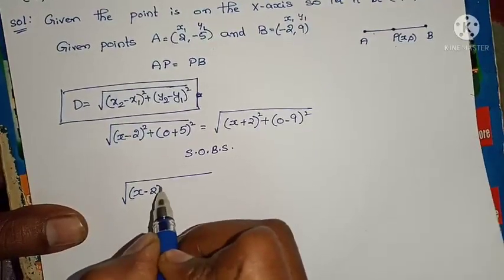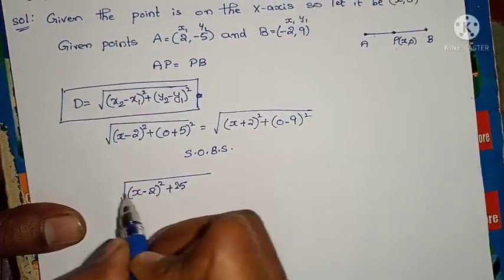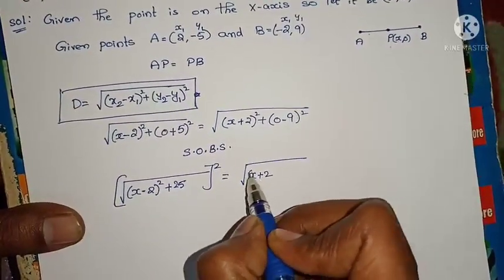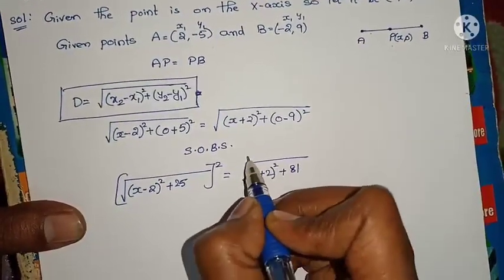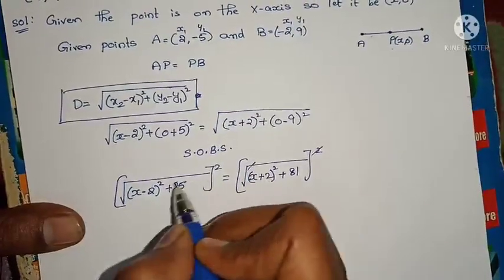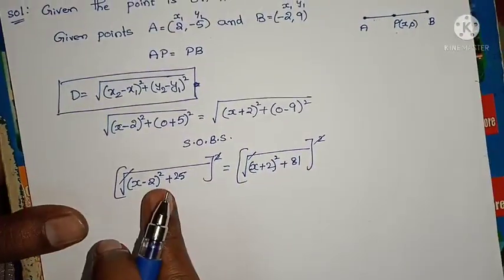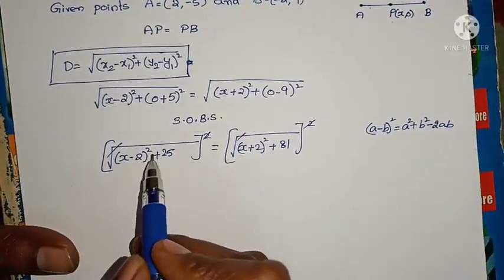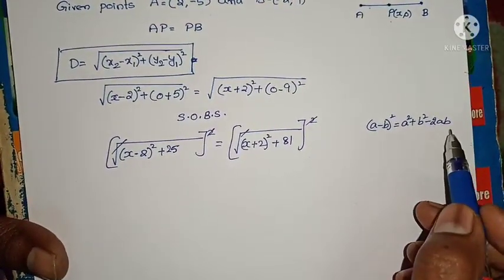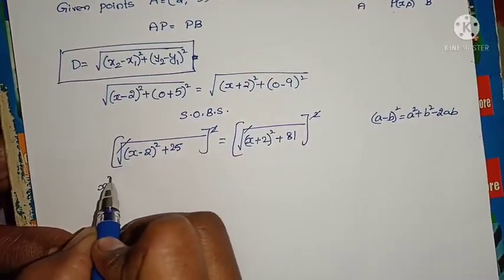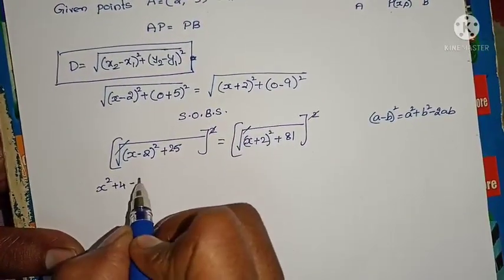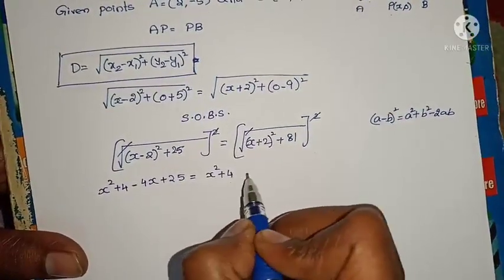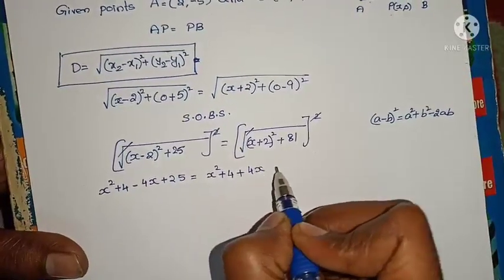After squaring: (x minus 2) whole square plus 5 squared equals (x plus 2) whole square plus 9 squared. That gives us (x minus 2) whole square plus 25 equals (x plus 2) whole square plus 81. Expanding using the formula a minus b whole square equals a squared plus b squared minus 2ab: x squared plus 4 minus 4x plus 25 equals x squared plus 4 plus 4x plus 81.